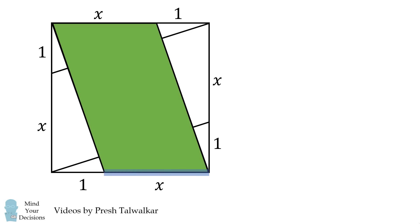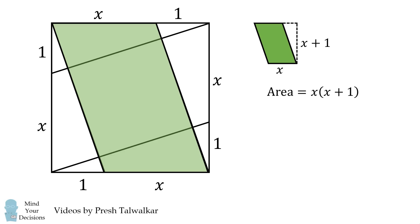One way to calculate the area is by taking the base of x and the height of x plus 1. The area is then the product of the base and height, which equals x multiplied by the quantity x plus 1. But there's another way to calculate the area of the parallelogram.